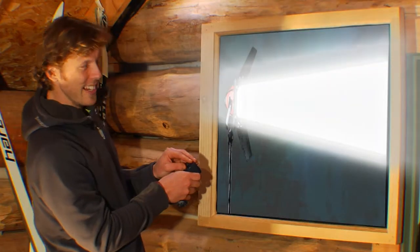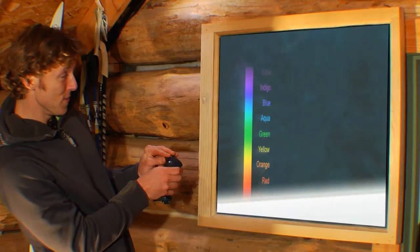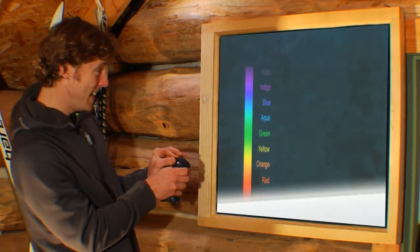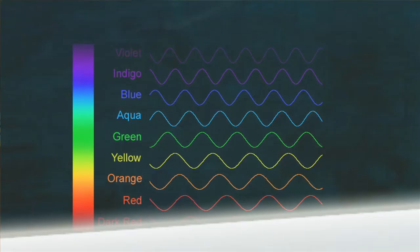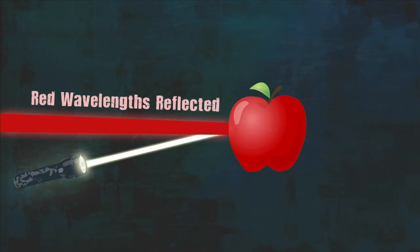White light contains all the different colors of light, and each color has its own wavelength. Did you ever wonder why, when you shine white light on this apple, the apple looks red? It's because only the red wavelengths of light are reflected back to our eyes, and all the other wavelengths from white light are absorbed by the skin of the apple.